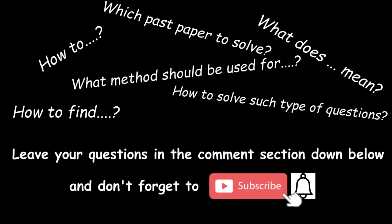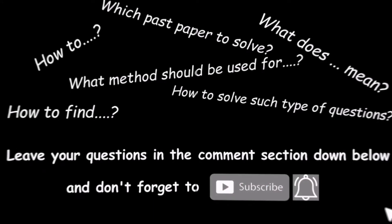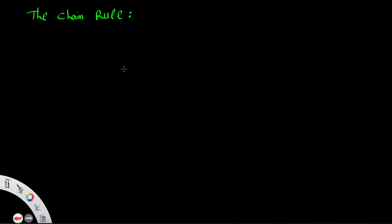Dear students, welcome to the video on The Chain Rule. Sometimes you will see composite functions given to differentiate. Look at this example: y is equal to (3x minus 2) to the power of 7.